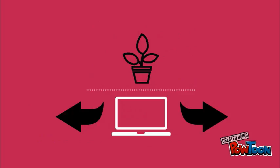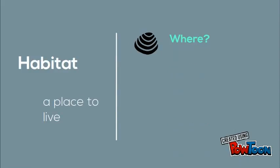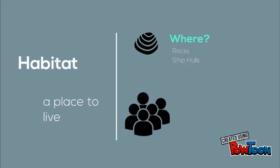Living organisms and species must have a place to live, or a habitat. In the zebra mussel example, zebra mussels live on rocks or ship hulls, usually at the bottom of the lake — this is therefore their habitat. For schools, students, teachers and administrators occupy the school building for the better part of the school day, which can therefore be considered their habitat.